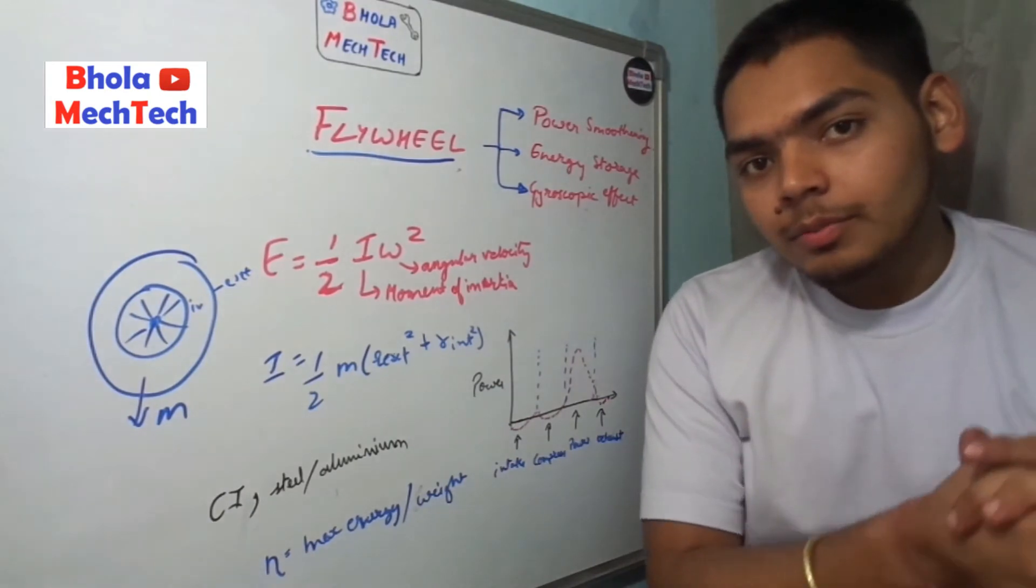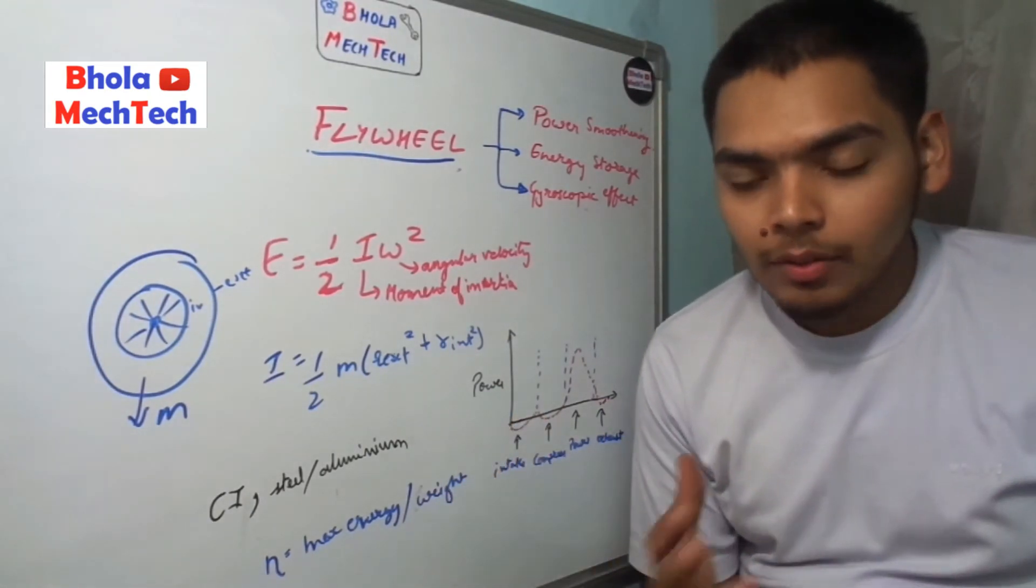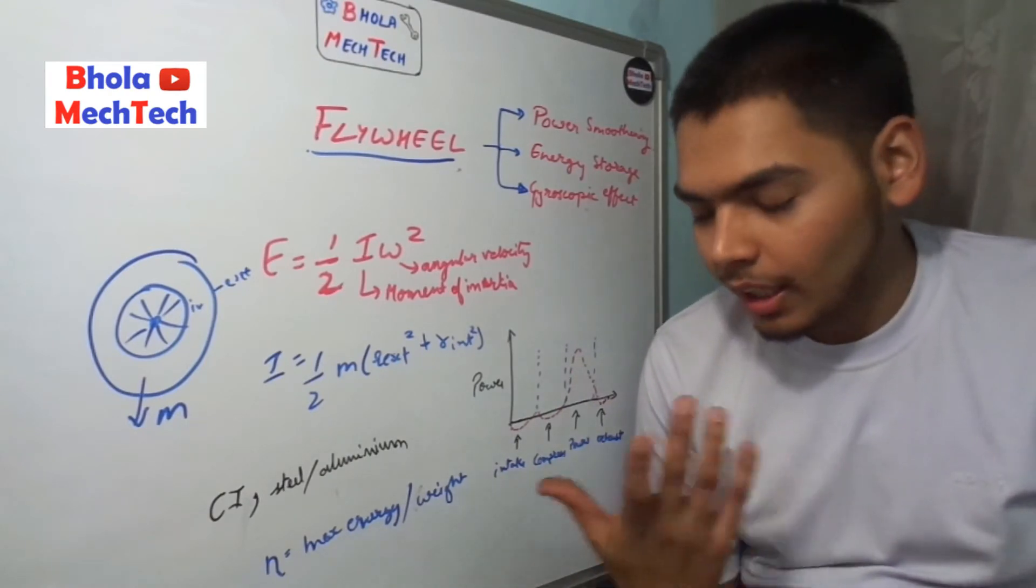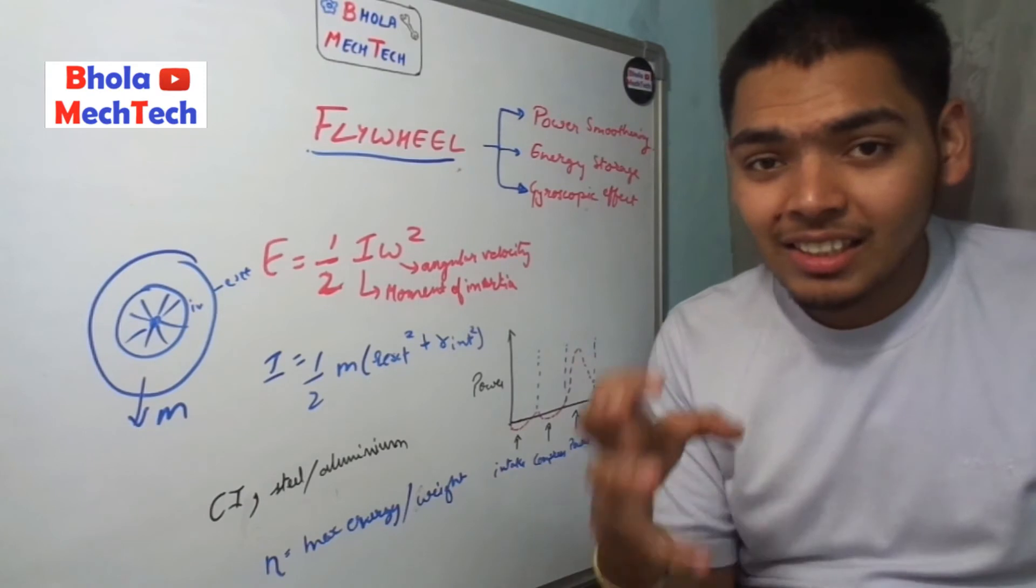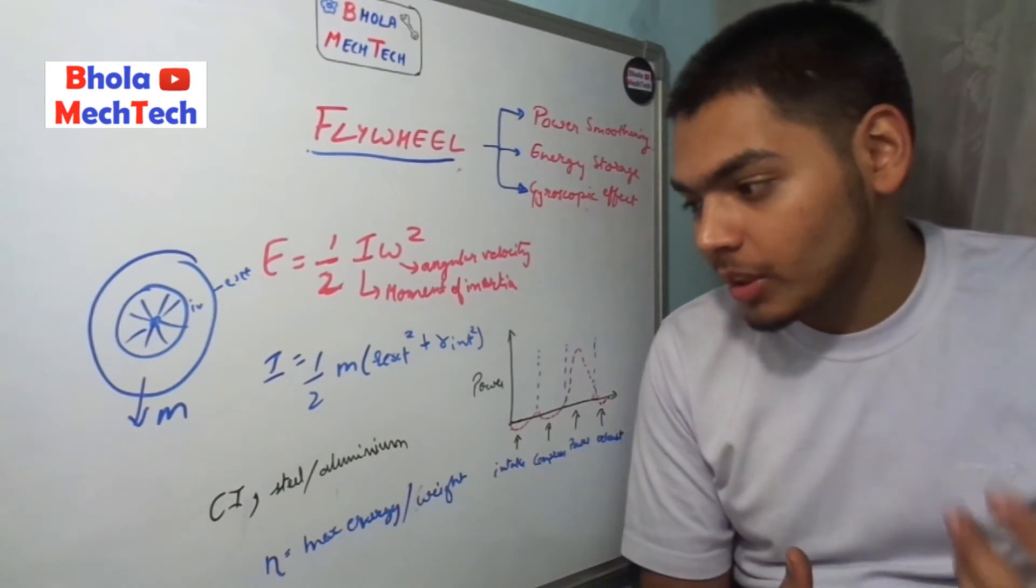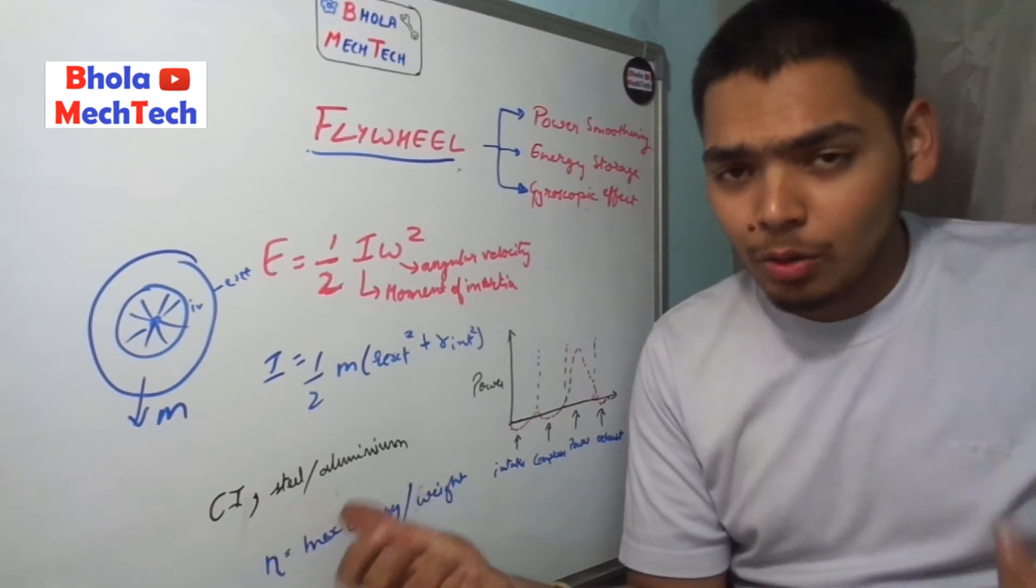Previously the flywheel was made from cast iron only. In the previous engines, the older generator engines, the flywheel is still made of cast iron. But when advancement takes place in the automobile industry, they make the flywheel from steel or from aluminum also.